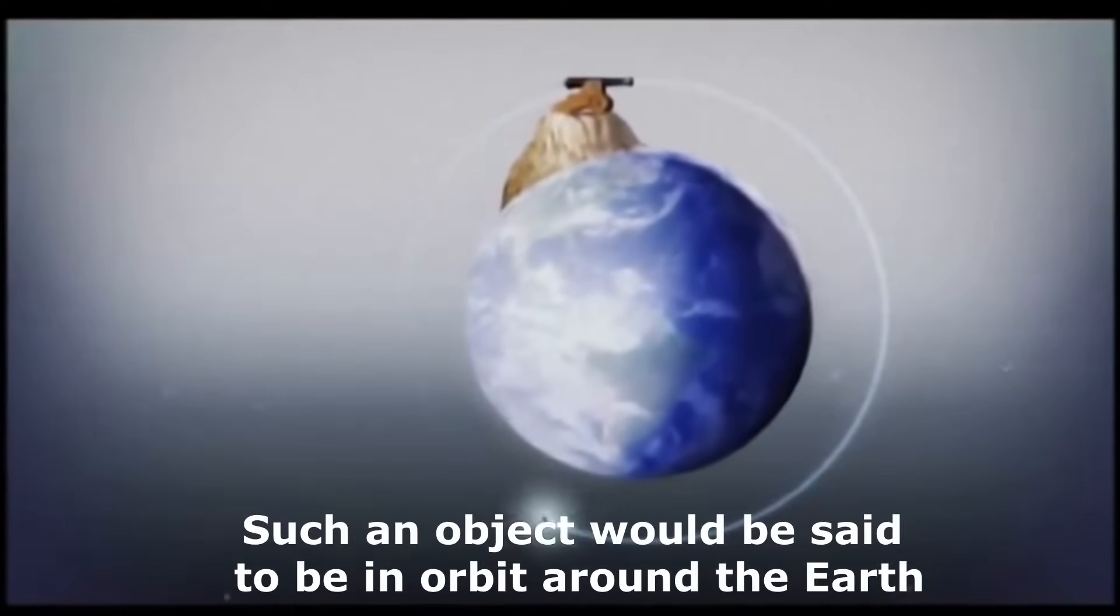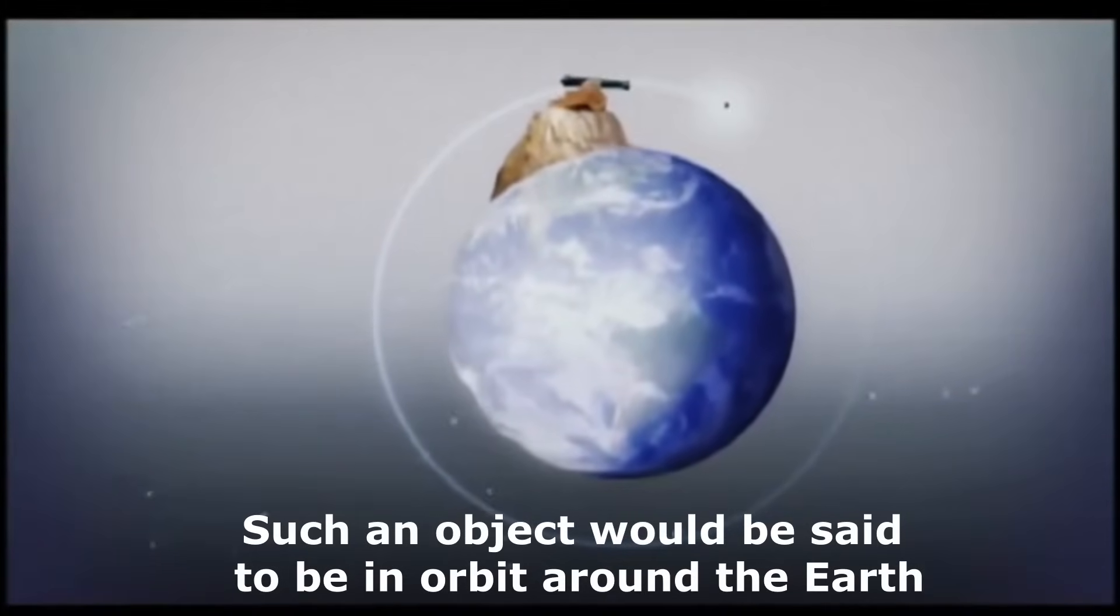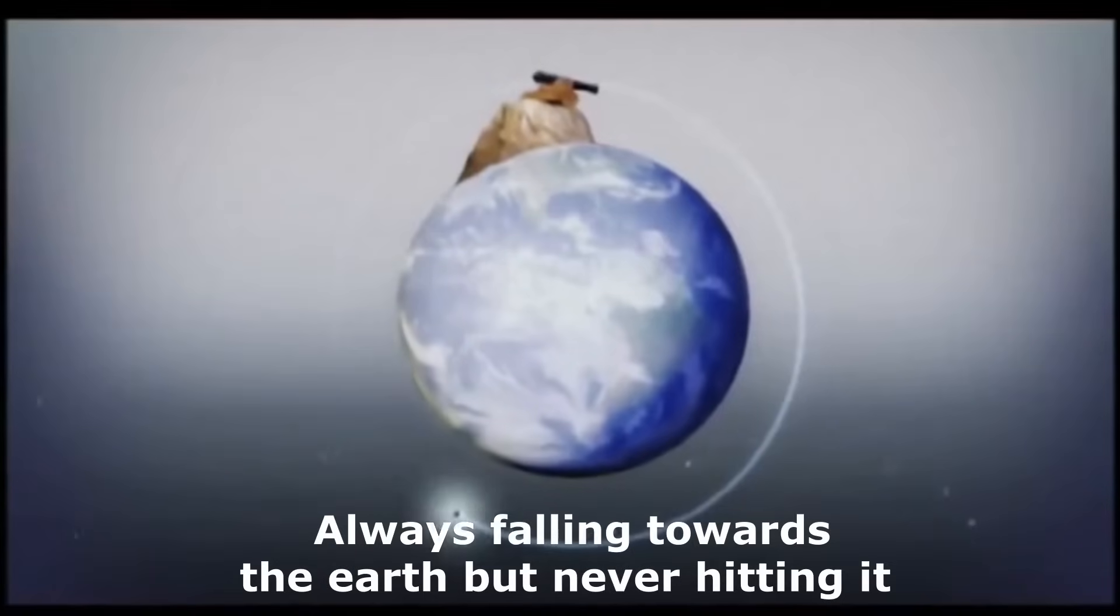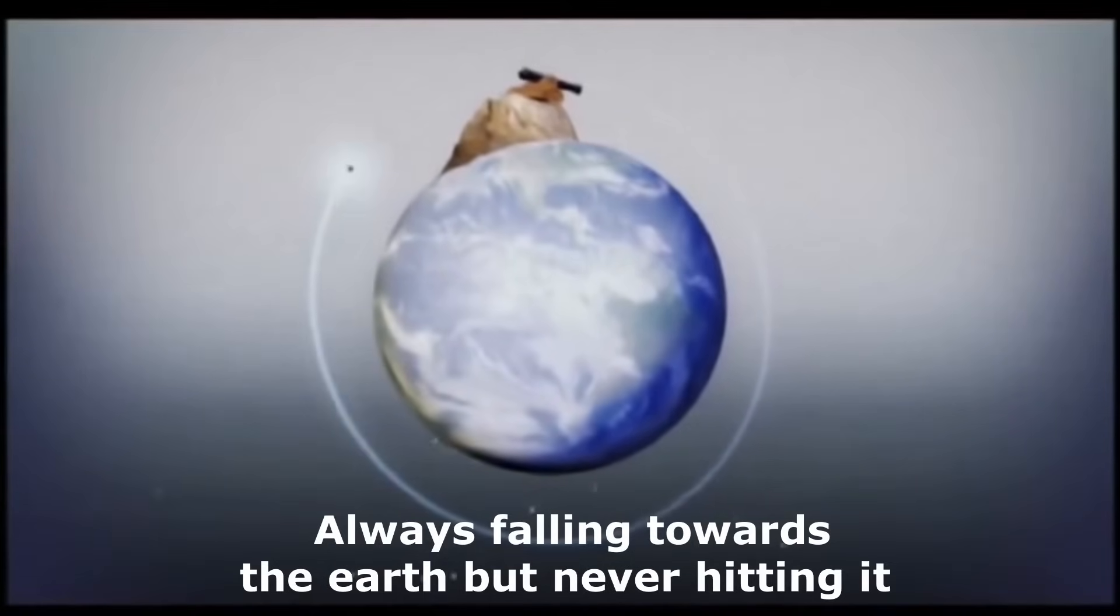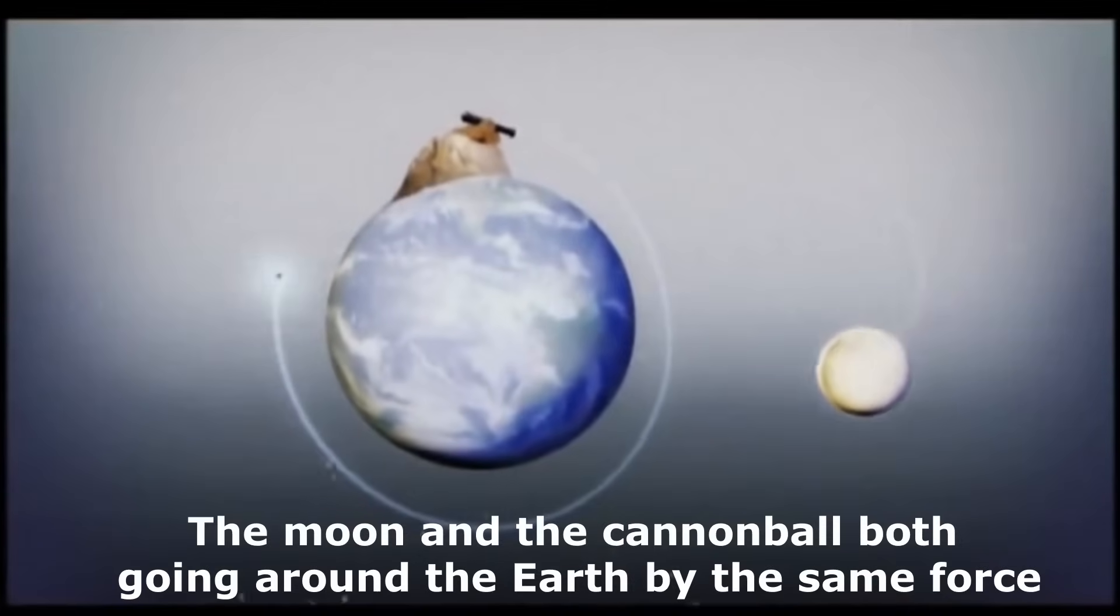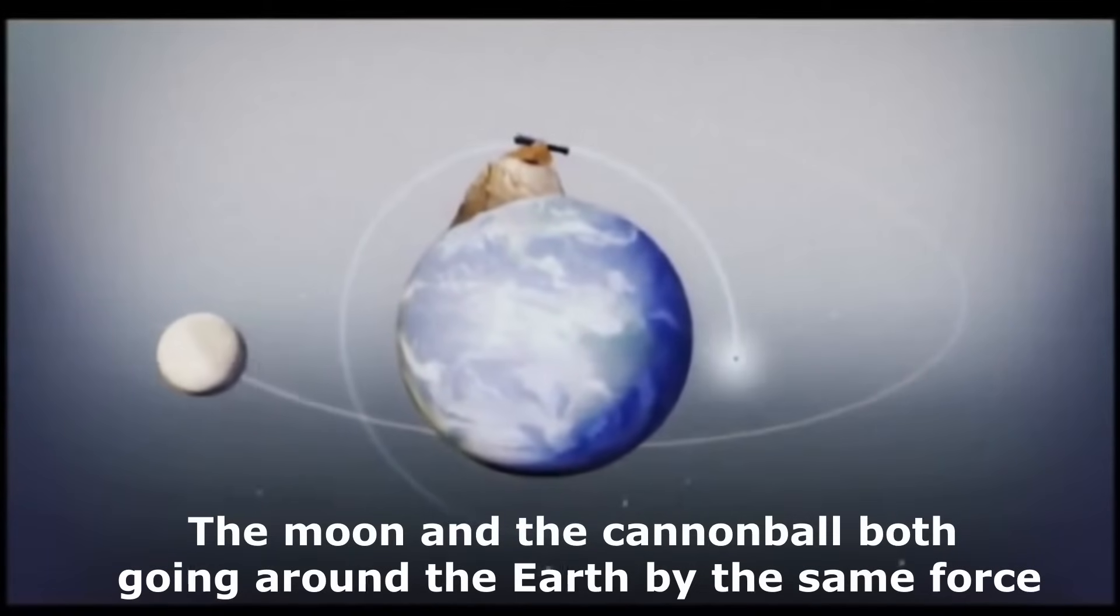Such an object would be said to be in orbit around the earth. It will always be falling towards the earth but never hitting it. The moon and the cannonball both going around the earth by the same force.